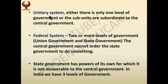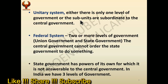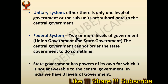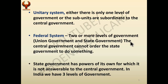In the unitary system, either there is only one level of government — the central government — or all subunits are subordinate to the central government. In the federal system, we have two or more levels of government. The first is the union government, then the state government. The central government cannot order the state government to do something, as there are separate powers for state government and the center cannot interfere in those powers.